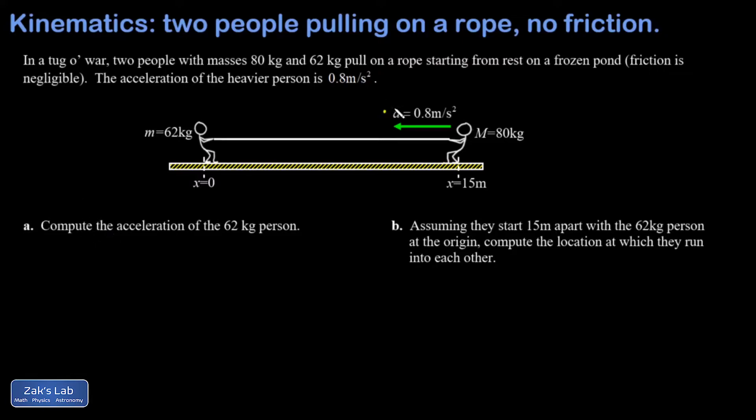The strategy here is that since we know the acceleration and the mass of the heavier person, we can find the force on them. Then we use Newton's third law to say these people must exert forces on each other with equal magnitude in opposite directions.